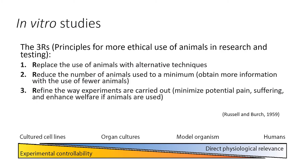First, there are obvious ethical issues on the use of animal studies. This has been a focus for decades, and more than 60 years ago the principle of the Three Rs — refine, reduce, and replace — were developed. The Three Rs principle has been the guiding principle for animal experimentation, and the overall goal is to replace animal experiments whenever possible.